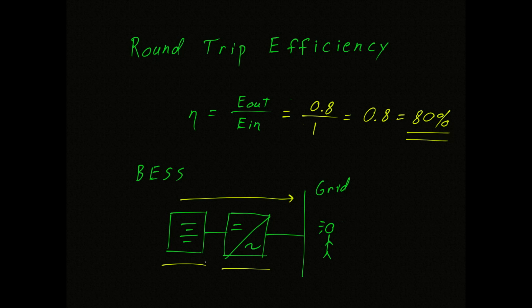Likewise, a lead acid battery-based storage system would be slightly less than this, and a lithium-ion battery system might be a little bit better. Keep in mind, I'm not talking about the round-trip efficiency of the battery itself. I'm talking about the round-trip efficiency of the battery when connected to the converter.